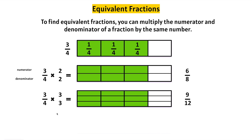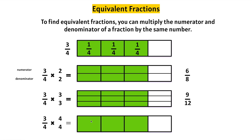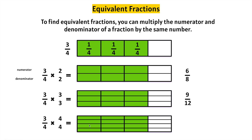Let's find one more equivalent fraction for three-fourths. This time we can multiply the numerator by four and the denominator by four. Let's make three-fourths and make four times as many numerators and denominators. One, two, three, four.